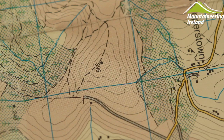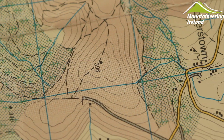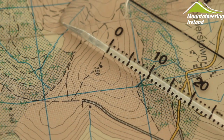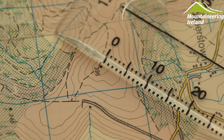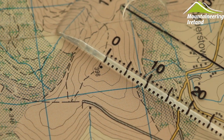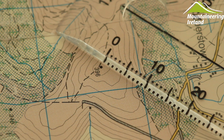In this example we're going to take a 1:50,000 map and measure the distance from spot height 396 to the forest corner. We take the compass, place the zero up against the 396, and measure how many millimetres across to the forest corner. In this example there are 8 millimetres, so 8 by 50 would be 400 metres.